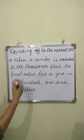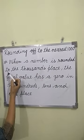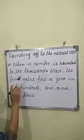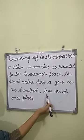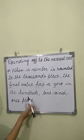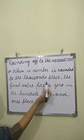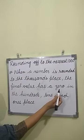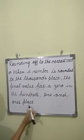Let's learn: when a number is rounded to the 1000 place, the final answer has 0 in the 100s place, 10s place, and 1s place.